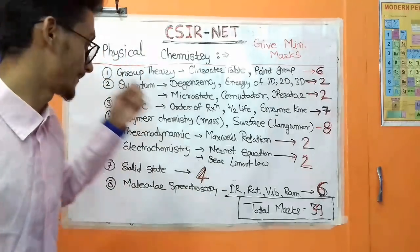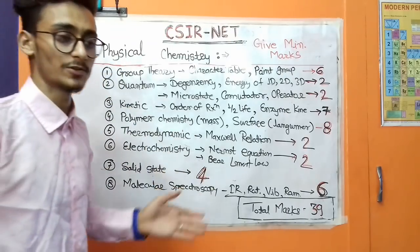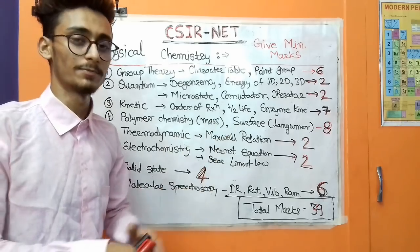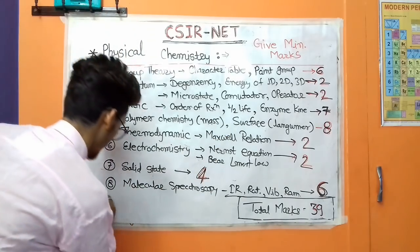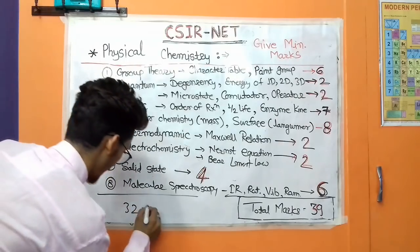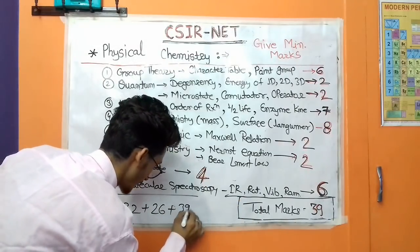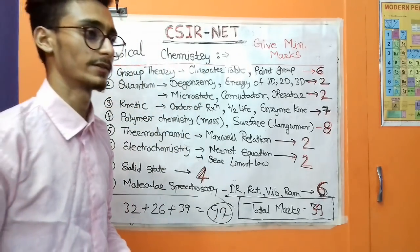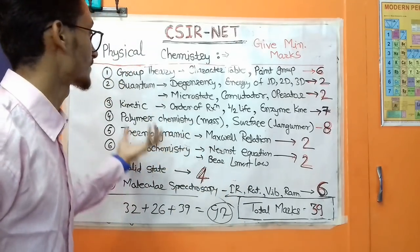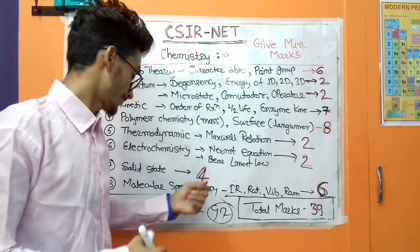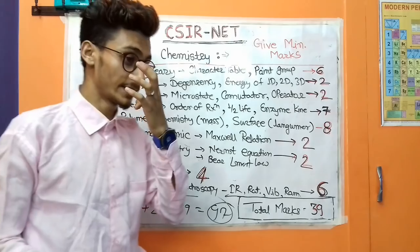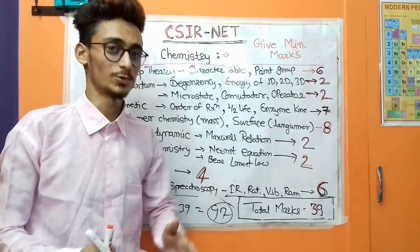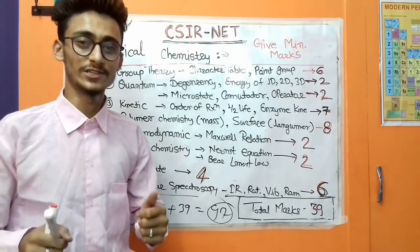These topics from physical chemistry, organic chemistry, and inorganic chemistry are expected to come in CSIR NET 2024. You can see approximately 32 marks from inorganic, 26 from organic, and 39 from physical — totaling approximately 97 marks. By focusing on these topics, you can achieve 90+ marks. You can also focus on other topics to further increase your marks. Remember, first attempt Section C — as the saying goes, go for the gold first. If you liked this video, please like, share, and comment.